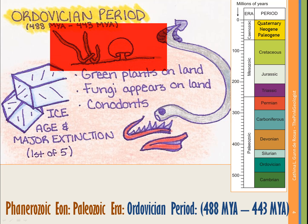For instance, green plants and fungi first appear on land here. Invertebrates in the marine community also diversify greatly.